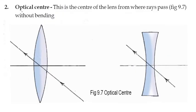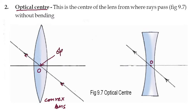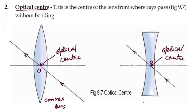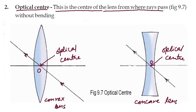Now come to the second definition, that is the optical center. The optical center is the center of the lens from where rays pass without bending. That one is the optical center — this is for the concave lens.